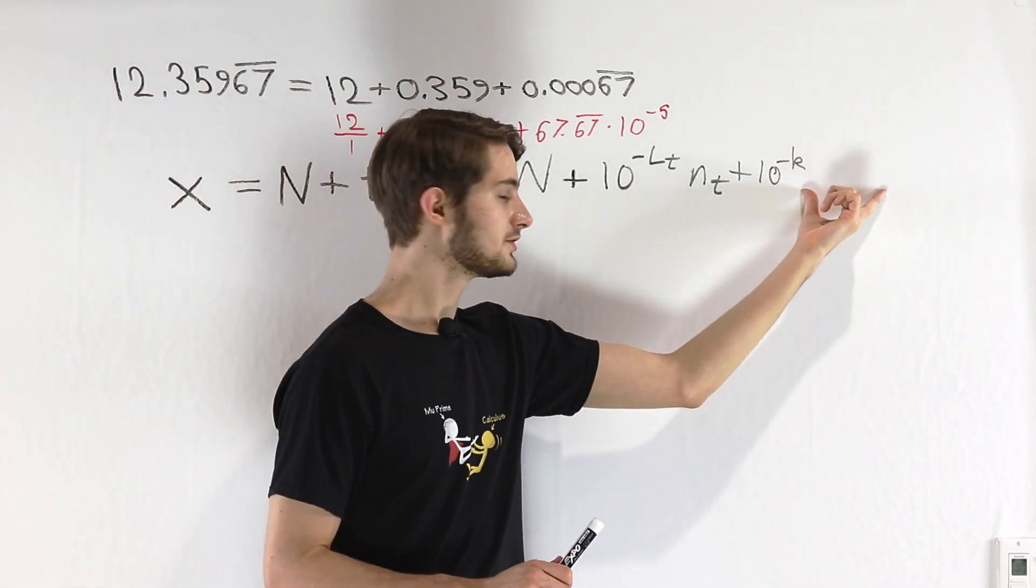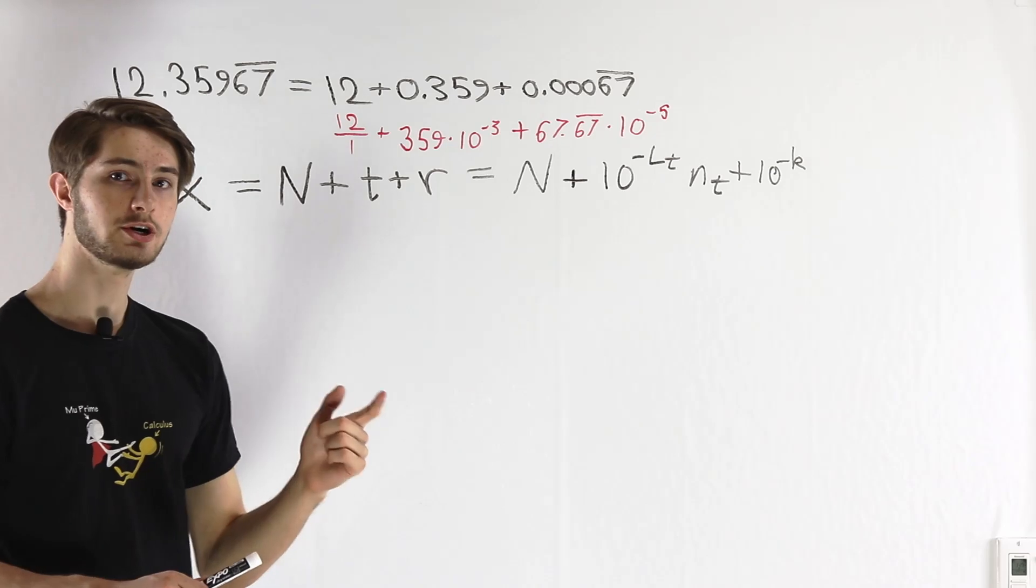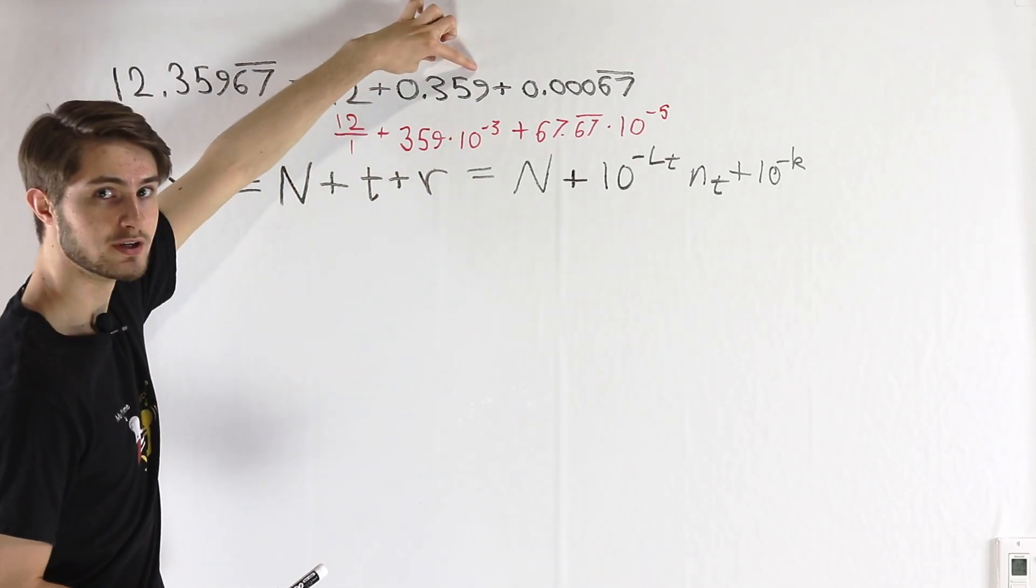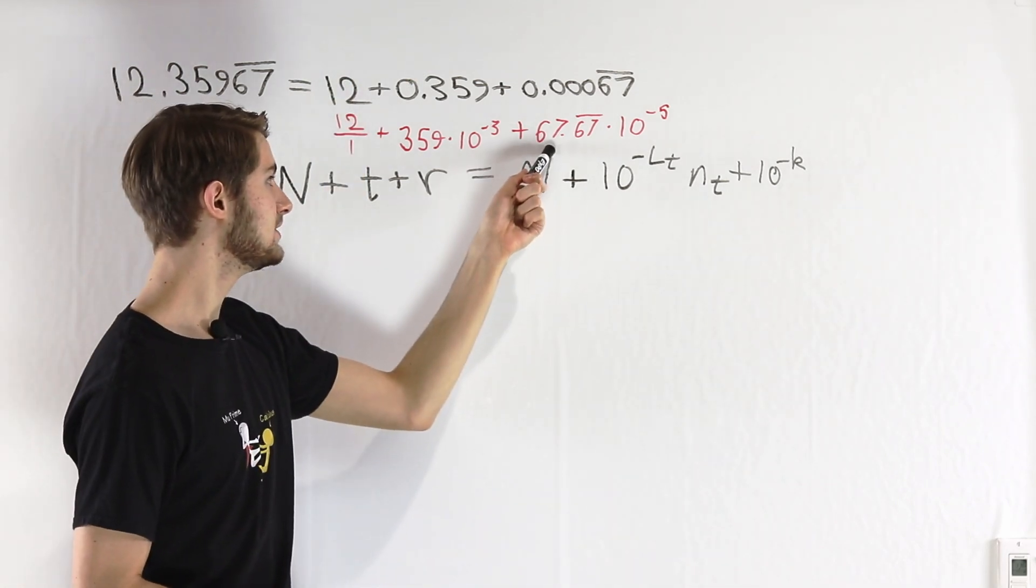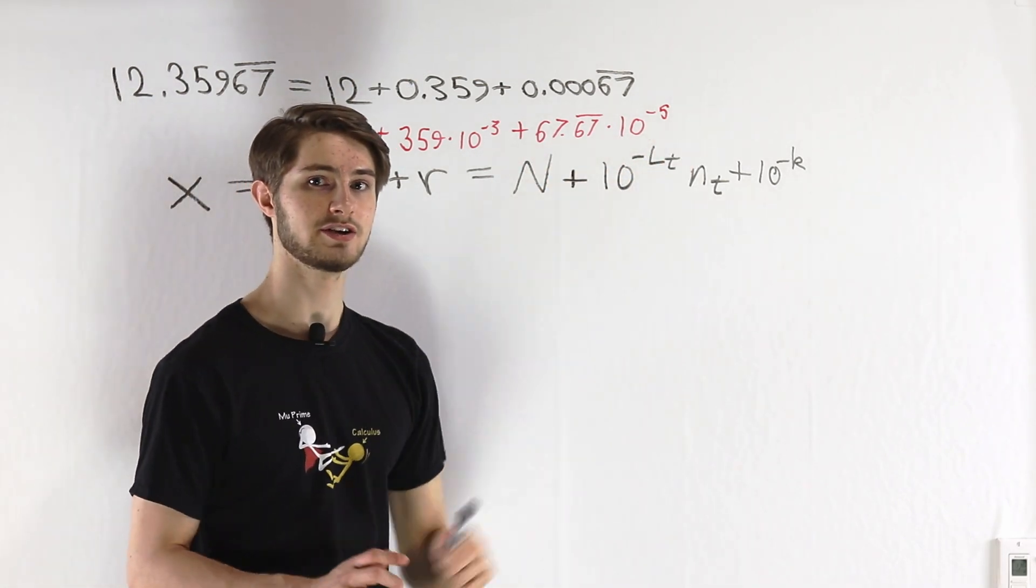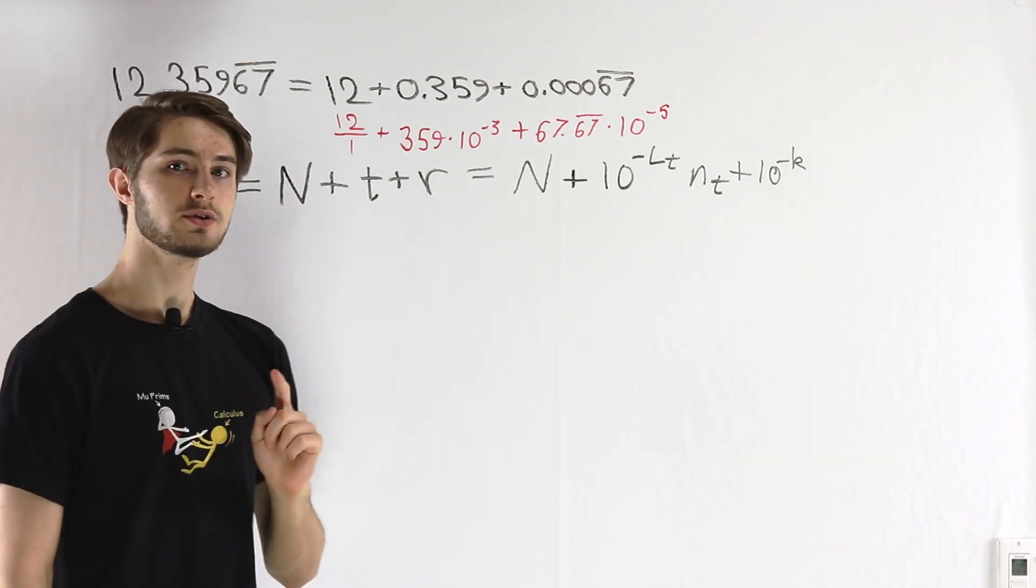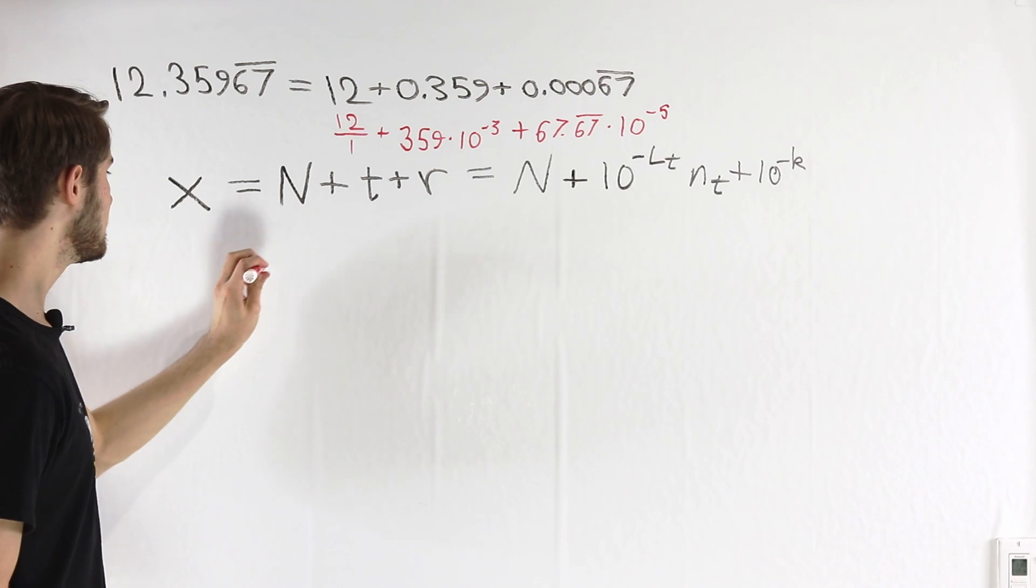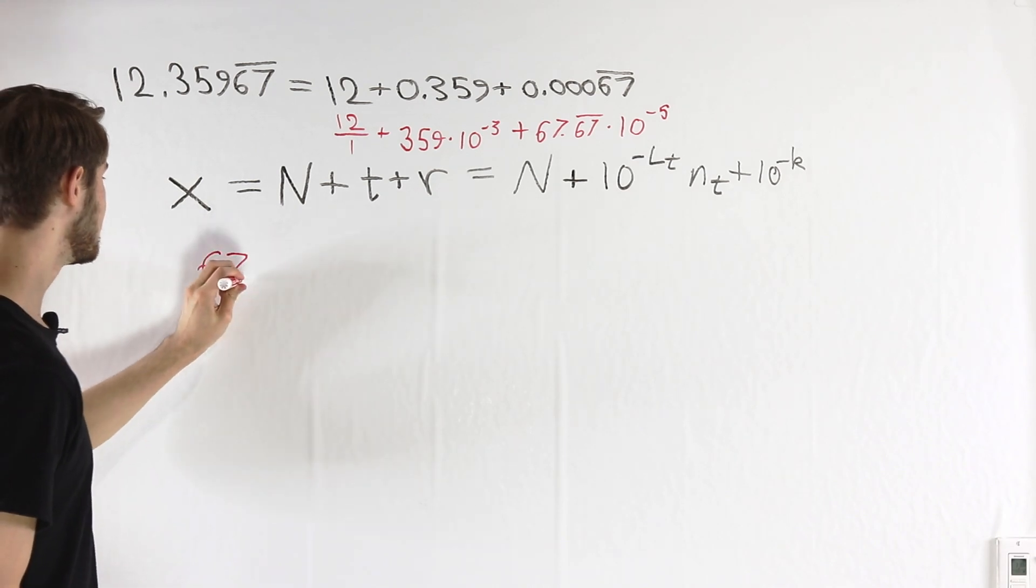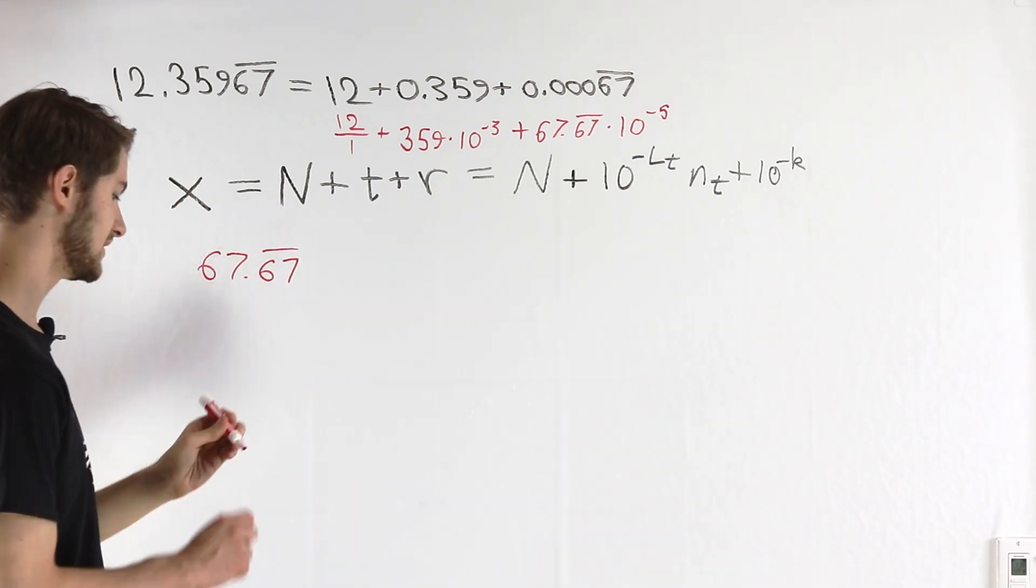For the terminating decimal, that something that we multiplied was just those digits, 3, 5, 9. But in this case, we still have an infinite number of decimal places. So we need to do a little more work to figure out what goes here. Let's think about what is 67.67 repeating.